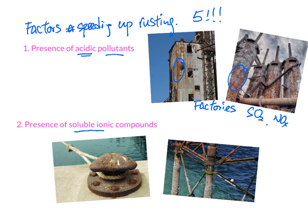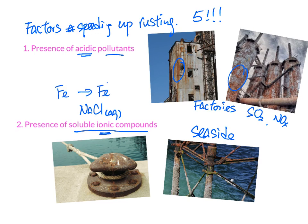The second factor is soluble ionic compounds. For example, near the seaside you have seawater containing a lot of salt — commonly sodium chloride (NaCl). These soluble ionic compounds facilitate the process of iron losing electrons, encouraging that step, so the rusting process becomes much faster.